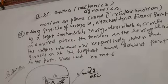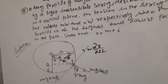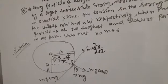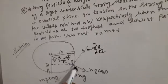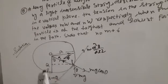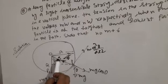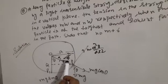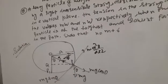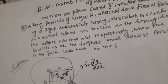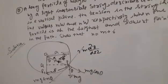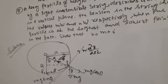We have to show that N equals M plus 6. We have a figure: a circle of radius A with centre O. Let small m be the mass of the particle, W equal to mg, and small m equal to W upon g. The fixed point is O, and one end of the string of length A is attached to point O.